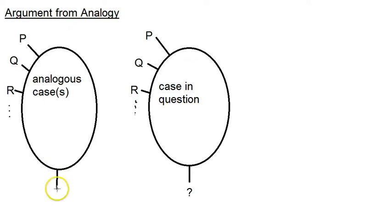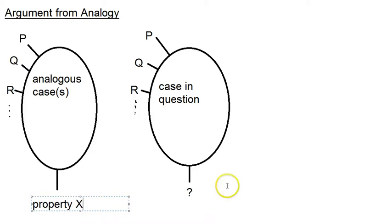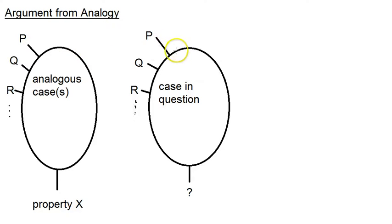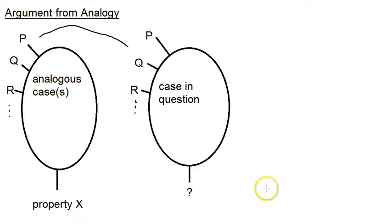The analogous case has what I'll call property X — the disputed property. If we're wondering whether the case in question has property X or not, we resolve this by drawing an analogy between the analogous case and the case in question. Here's a silly example: let's say you've got a car and you've told me some things about it — I haven't seen it. I know your car is kind of like my car in that they're both red, and my car goes fast. So I'm going to think maybe your car also goes fast. This is a really terrible argument from analogy, but it is still an argument from analogy — it's just a poor version of it.